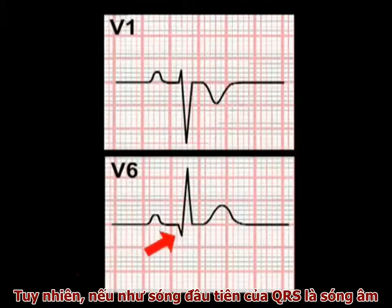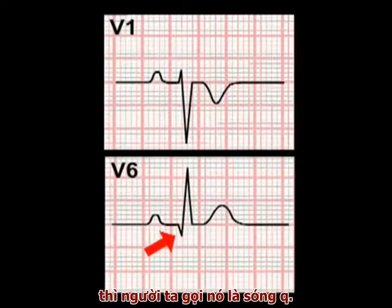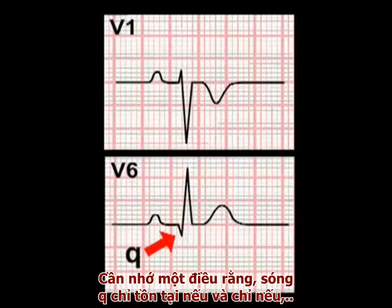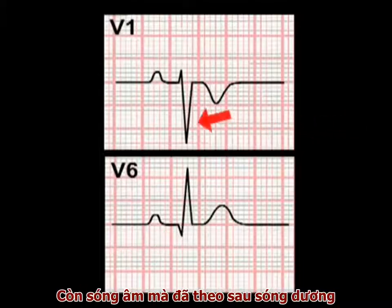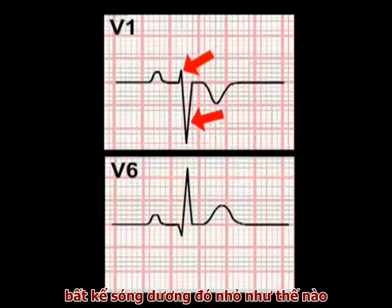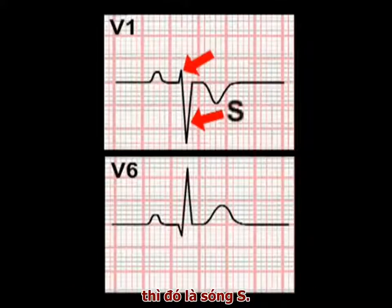However, if the first deflection of the QRS complex is negative, this deflection is termed a Q-wave. This is important. A Q-wave can only exist if, and only if, the first deflection of the QRS complex is negative. A negative deflection following a positive deflection, no matter how small that positive deflection may be, is an S-wave.